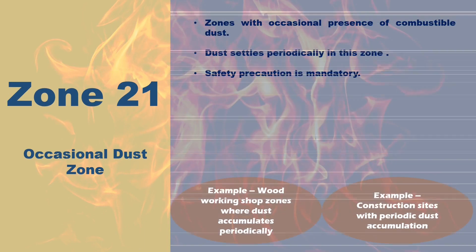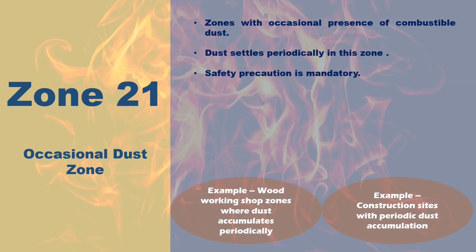Zone 21 - The Occasional Dust Zone. Zone 21 is characterized by the occasional presence of combustible dust. In these environments, dust settles periodically, and if a spark occurs, it can lead to a hazardous situation. Think of a space where dust settles on the floor or surfaces now and then, much like your home gathering dust over time. Zone 21 examples include woodworking shops where dust may intermittently settle, or construction sites where dust may collect in certain areas. Safety precautions are still necessary to manage the occasional risk of dust-related explosions.